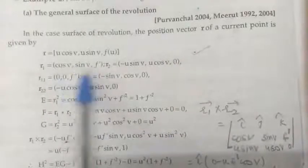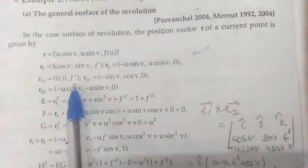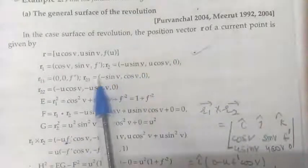Now, we find the second order partial derivatives. Differentiating r₁ again with respect to u: the derivatives of cos v and sin v terms with respect to u are 0, and the derivative of f' is f''. Differentiating r₁ with respect to v: the derivative of cos v is −sin v, the derivative of sin v is cos v, and the third coordinate is 0. Differentiating r₂ with respect to v: the derivative of −u sin v gives −u cos v, derivative of u cos v gives −u sin v, and the third coordinate remains 0.